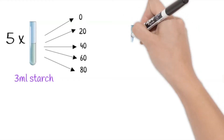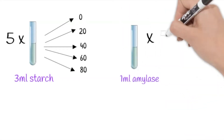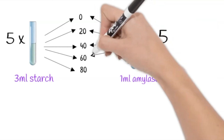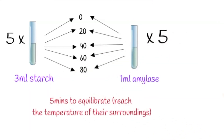We will then place one millilitre of amylase in five different test tubes and place one of these into each of the water baths. All test tubes will be left in their respective water baths for five minutes to allow the temperatures to equilibrate. During this time, dropping tiles will be set up which have small testing wells in them. One drop of iodine solution will be placed in each testing well, ready to check for starch.